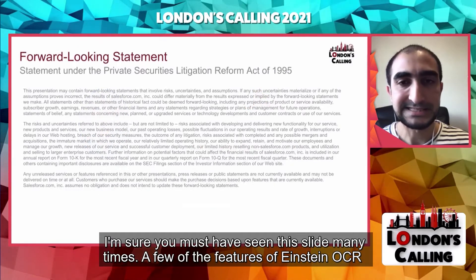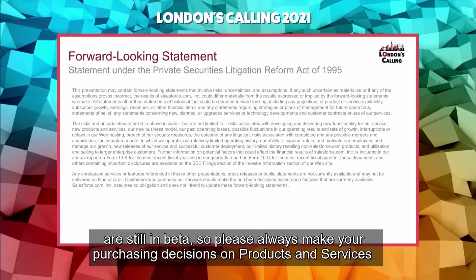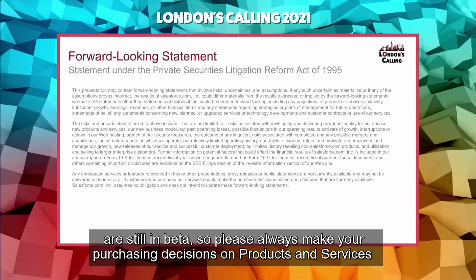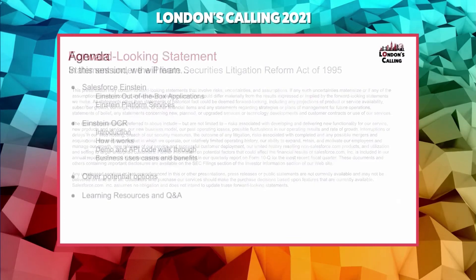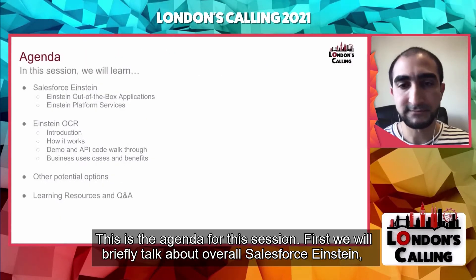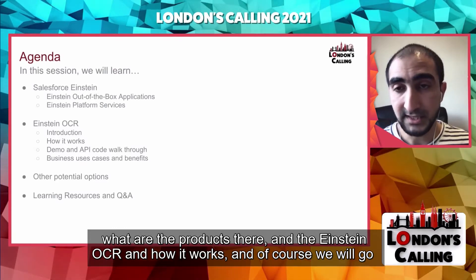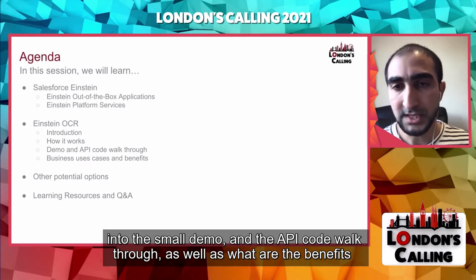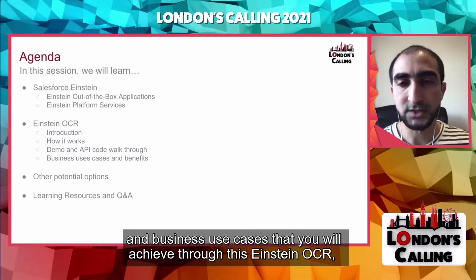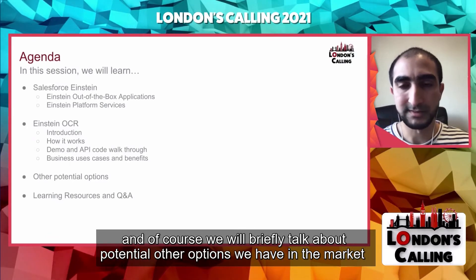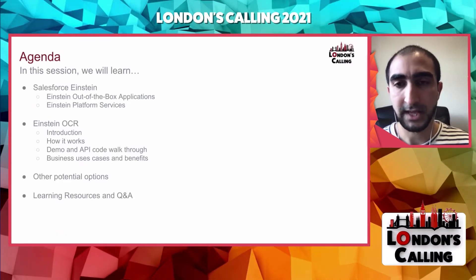A few of the features of Einstein OCR are still in beta, so please always make your purchasing decisions on products and services that are currently available and not what you see here today. This is the agenda for this session. First we will briefly talk about overall Salesforce Einstein and what products are there, what is Salesforce Einstein OCR, how it works, and we'll go into a small demo and API call walkthrough, as well as the benefits and business use cases. We'll also briefly cover other options available in the market and learning resources.